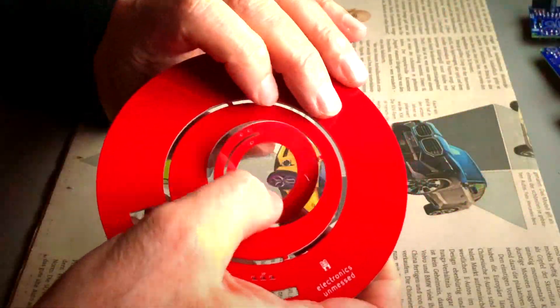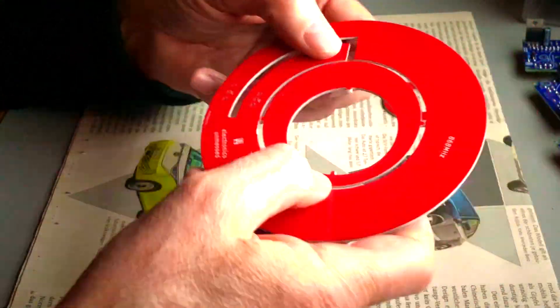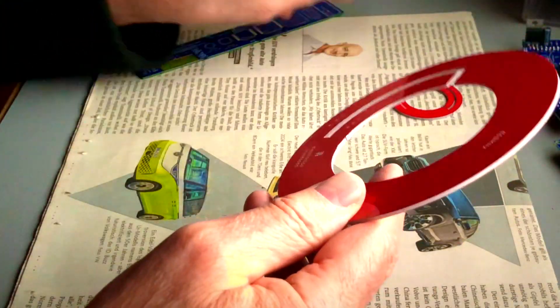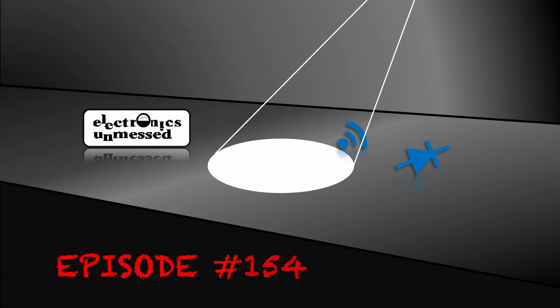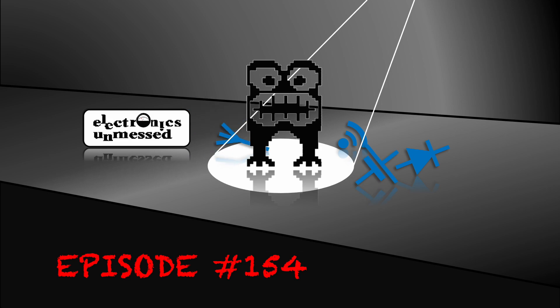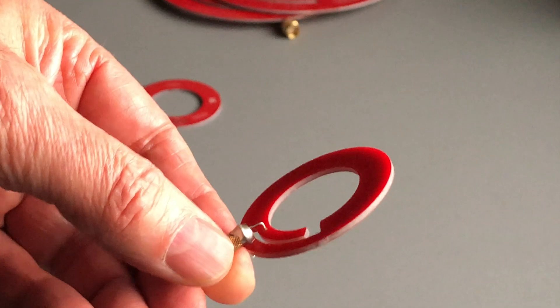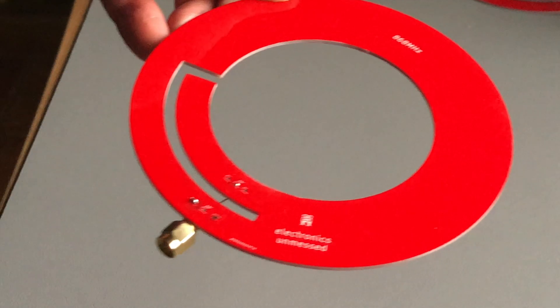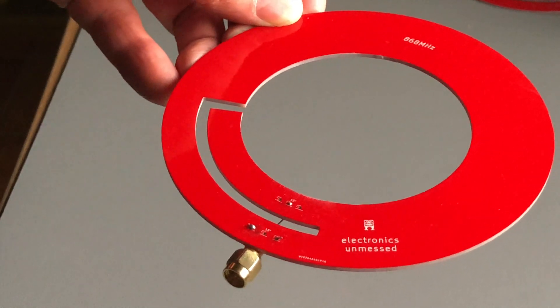The printed loop antennas arrived today. A real breakthrough in terms of reproducibility and quality. It's improving interference resilience of receivers, because it's practically an antenna and a pre-selection filter in one.